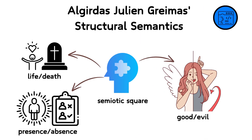Greimas's semiotic square helps to map out the fundamental elements and their oppositions within a story, such as life/death, presence/absence, or good/evil. This model extends beyond simple binary pairs by including their complementary and contradictory terms, thus allowing for a more nuanced understanding of how these elements interact and oppose each other within a text.